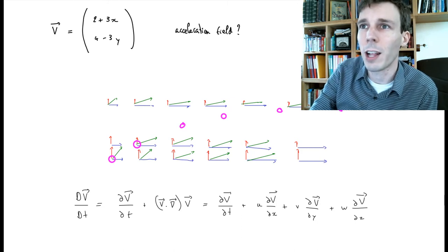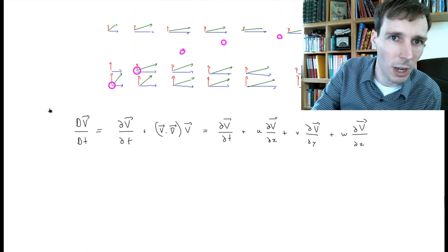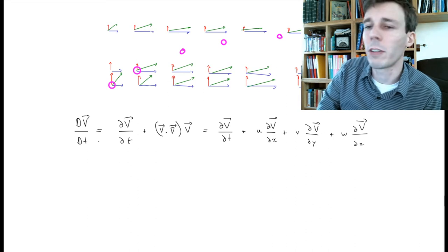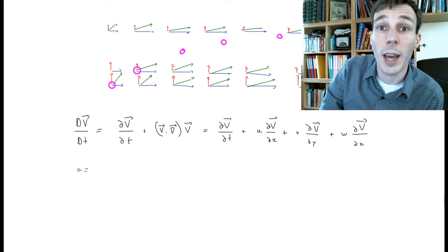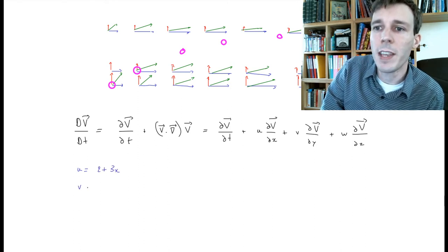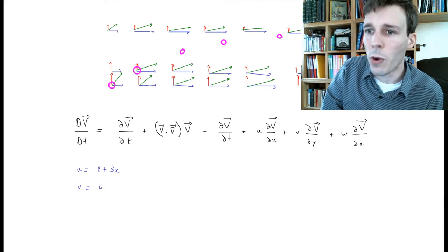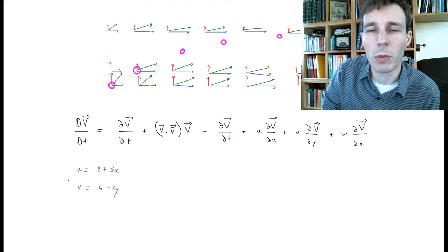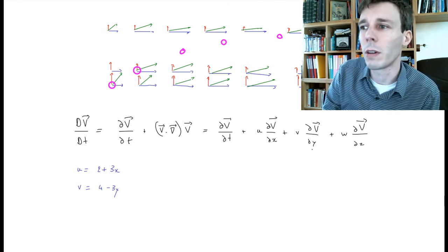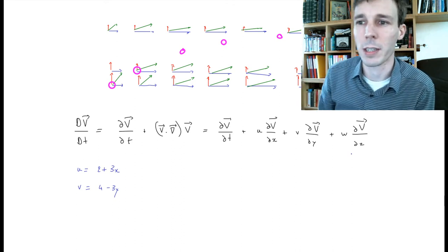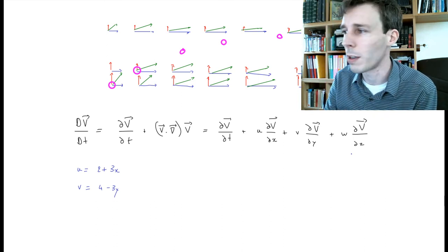This expression at the bottom is the acceleration field for our flow. In our specific case we have: u, the x-component of velocity, equals 2 + 3x, and v equals 4 − 3y. This is completely arbitrary — there's no physical flow that follows these rules exactly — but we are interested in the mathematical side to understand the acceleration field.